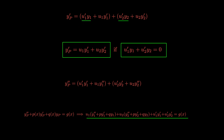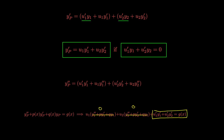We make a key observation: y1 is a solution to the homogeneous equation, so this term becomes zero and we can cross it out. Likewise, since y2 is also a solution to the homogeneous equation, that corresponding term also becomes exactly zero. So we get a lot of simplification, and the equation we end up with is just this one.